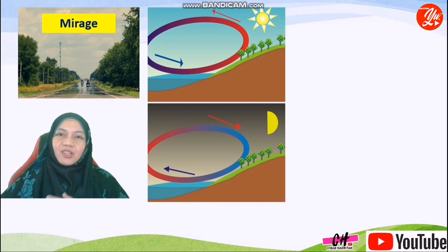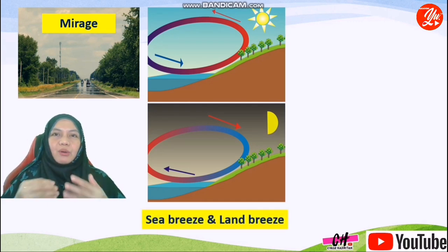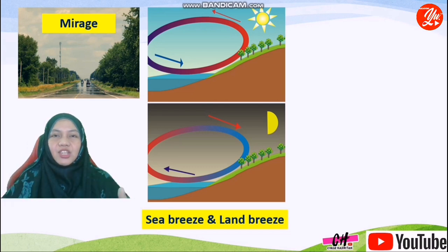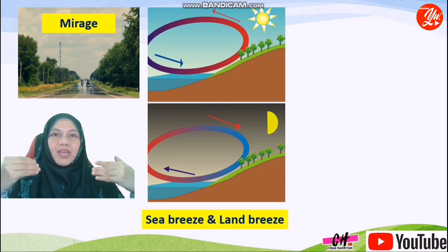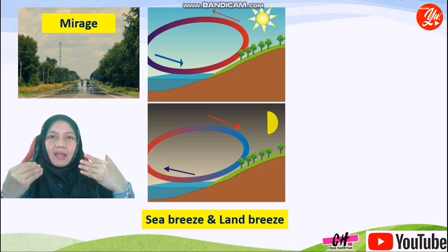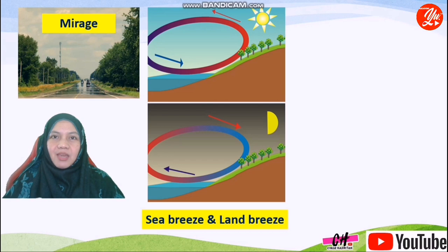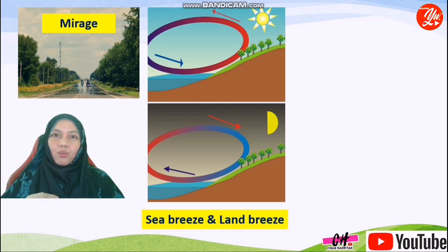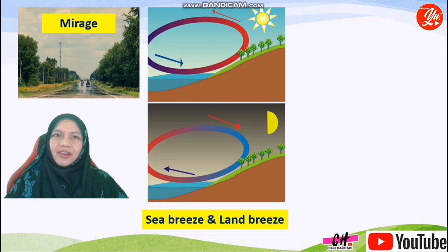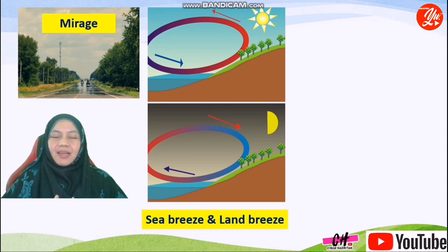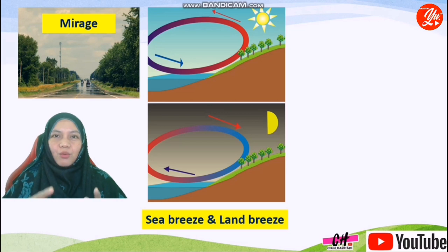How about the second diagram? This is what we call sea breeze and land breeze. Do you notice that when standing on a seashore during the day, we can feel that the wind blows from the sea towards the land? But when standing on the same beach at night, the opposite happens — the wind blows from the land towards the sea. This phenomenon can be explained by specific heat capacity, which we will learn in the next chapter on heat.